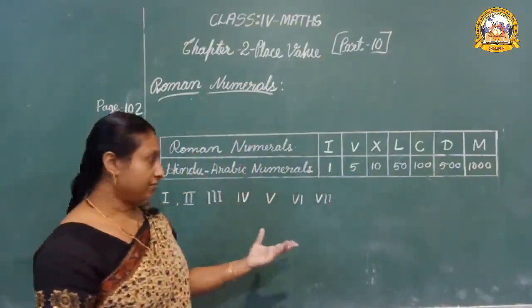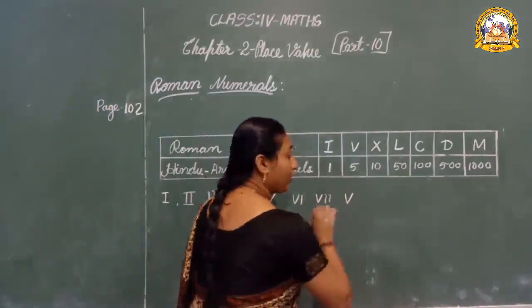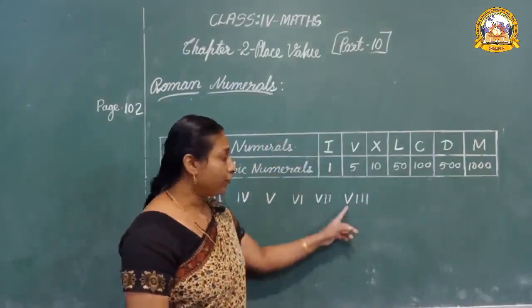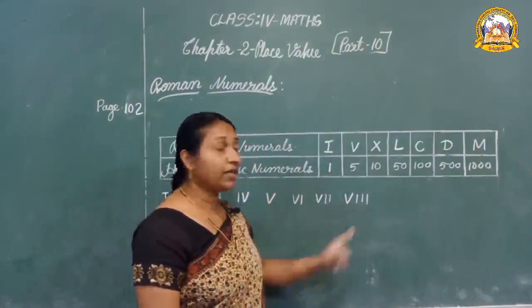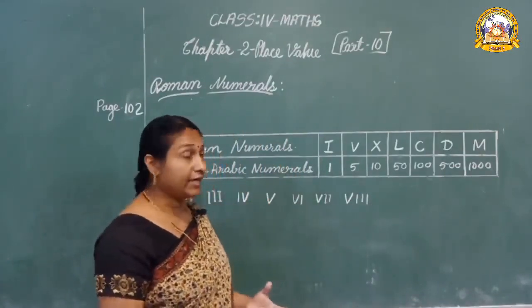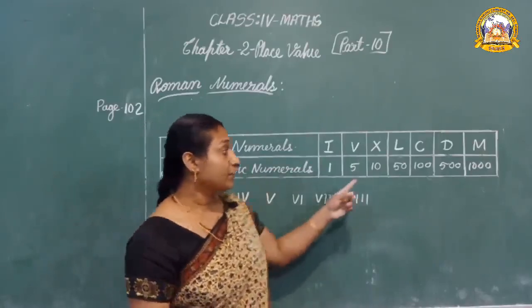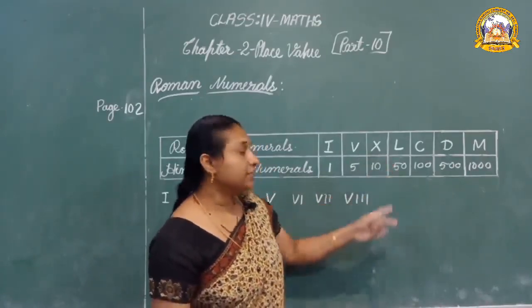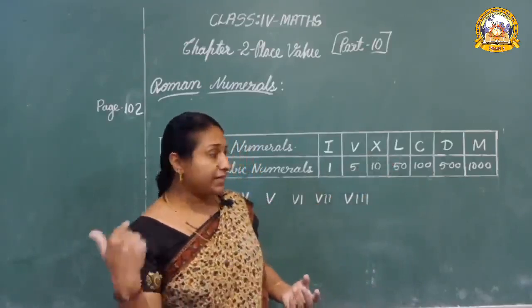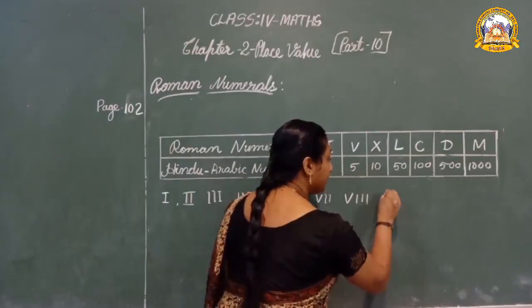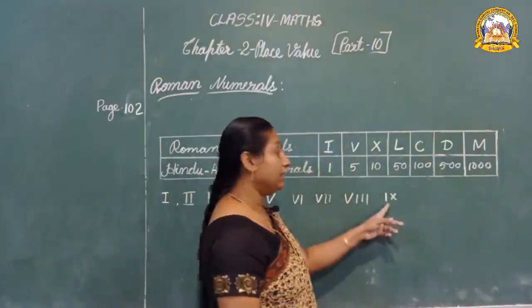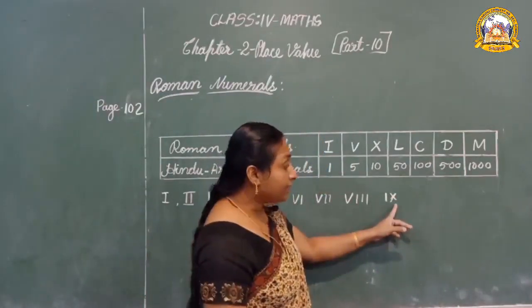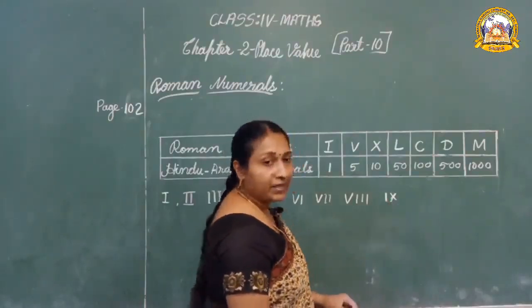Eight means five plus three — V and three I's — VIII. Next, nine means ten minus one. For ten, which letter is used? X. So nine means ten minus one: write X and before it give I — IX. IX represents 9.